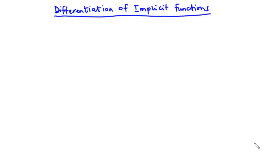Hello guys and welcome back to this channel. In today's video we want to continue our lesson on differential equations. Today we are going to look at differentiation of implicit functions. An implicit function in two variables x and y is a function in which neither of the variables x and y can be easily expressed in terms of the other. Basically, with this type of function it is very difficult to isolate y on one side of the equation.